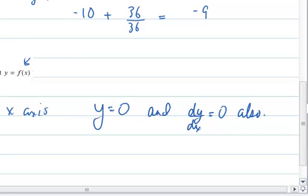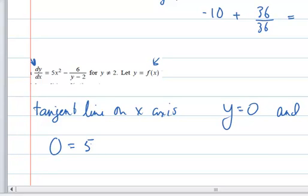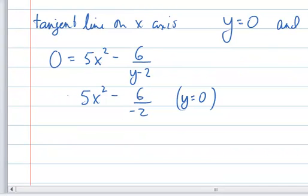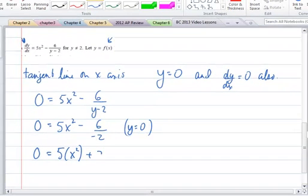So what we can do is we can set dy dx equals 0. And that will equal 5x squared minus 6 over y minus 2. We can then suppose that y equals 0. So 5x squared minus 6 over negative 2 because y equals 0, which results in us trying to find a point for x such that when we square it and add 3 to it we get 0. But that is impossible because you square any number it's going to become positive and add 3 to it, it's going to become more positive. And there's no way that that would ever equal 0. So that would be my justification for that.